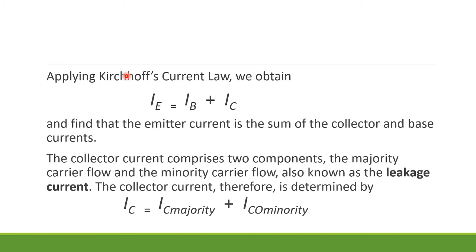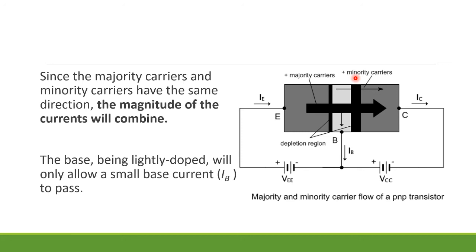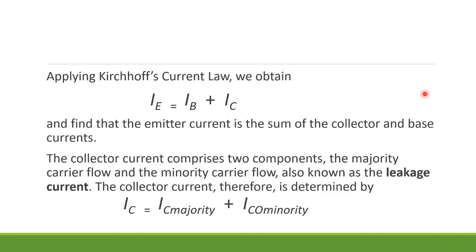Now, if we apply Kirchhoff's current law, we know that our emitter current IE is equal to the sum of these two. The collector current comprises of two components: the majority carrier flow and the minority carrier flow, also known as the leakage current. That minority carrier flow is called the leakage current. The collector current therefore is determined by the majority IC plus ICO, the minority. This is the current of the majority carriers and this is the current of the minority carriers. So IC is the total of the minority carriers plus the majority carriers that pass through here.